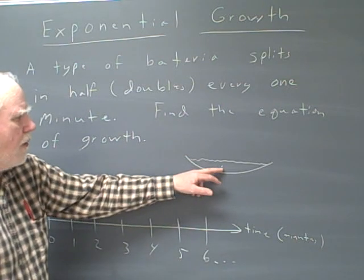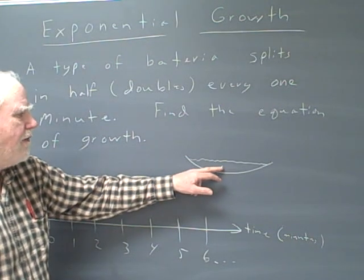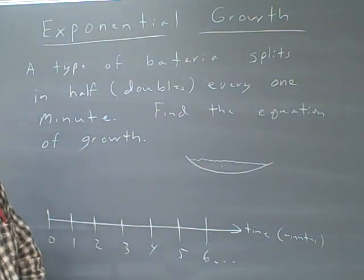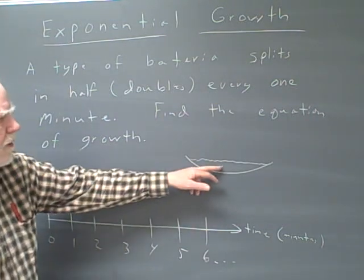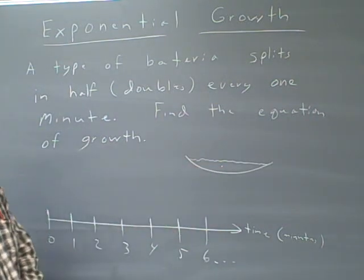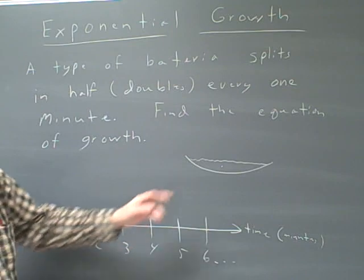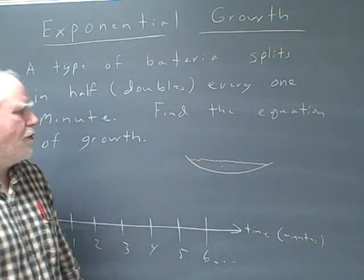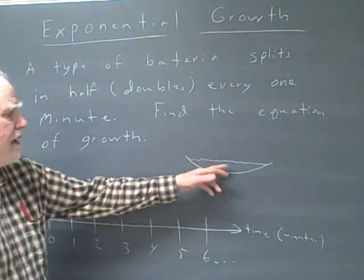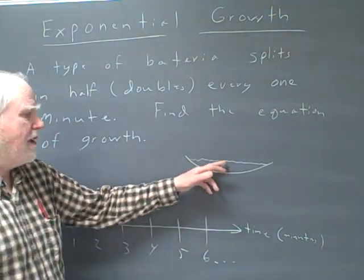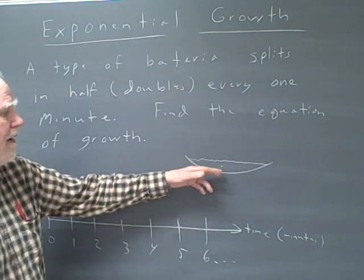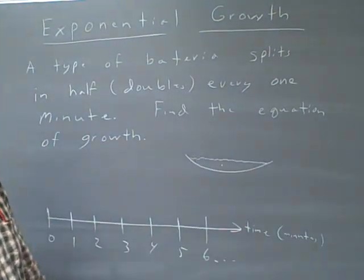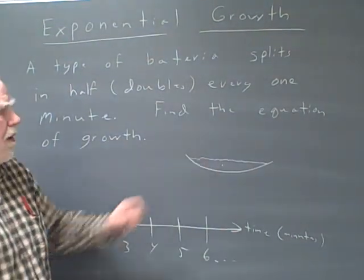First of all, we're going to start with one — a bacterium, if there's only one of them. We're going to start with one little critter, and every minute it's going to split in half and make two. So it's going to double every minute: there's going to be four, and there's going to be eight, and so on — that's the way it's going to grow.